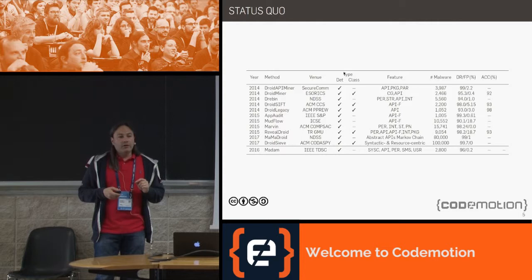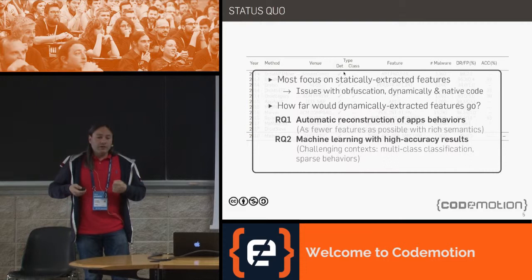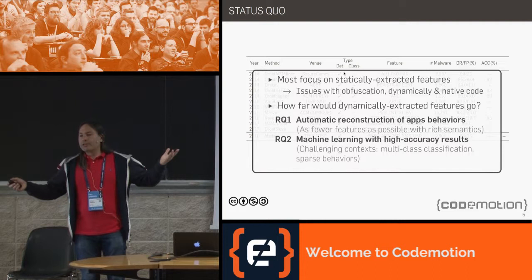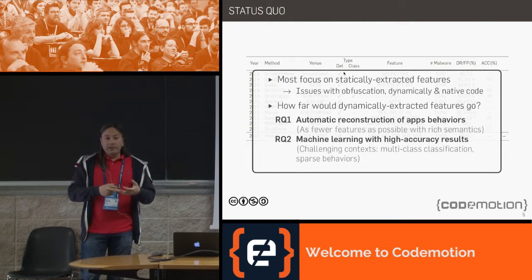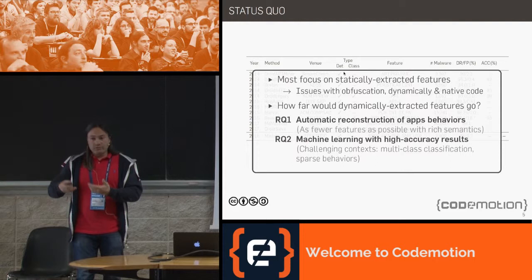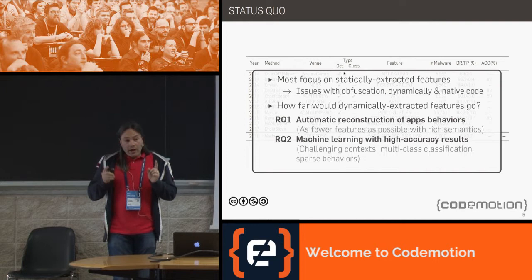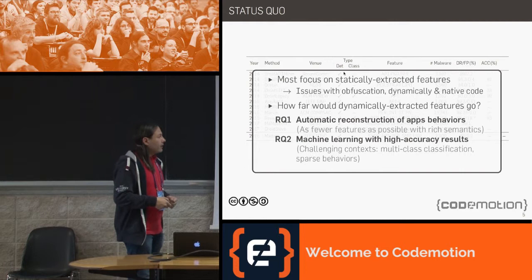There is very little work done on dynamic analysis. It is sometimes necessary to look at dynamically extracted features because it's so easy to obfuscate an Android application: you can encrypt strings, change the control flow graph, introduce reflection which is hard to handle statically, hide code in native code, or dynamically load DEX files. We wanted to understand how far we can go if we just rely on dynamically extracted features — I'm not advocating only dynamic analysis; both are important.